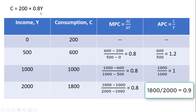In our final example, we have a consumption function and a table. I'm going to evaluate the consumption function at income levels of 0, 500, 1,000, and 2,000, find the corresponding consumption, and calculate the MPC and APC at each level. When Y = 0, C = 200, and MPC and APC are undefined. When Y = 500, C = 200 plus 0.8 times 500 equals 600. MPC = 400 divided by 500 = 0.8, and APC = 600 divided by 500 = 1.2.